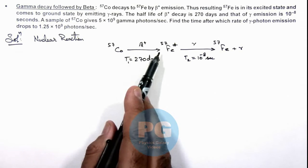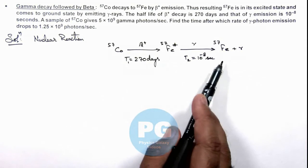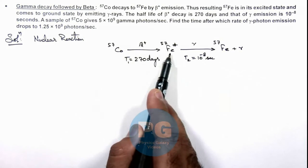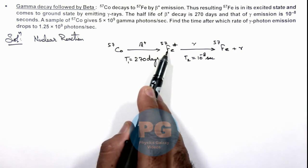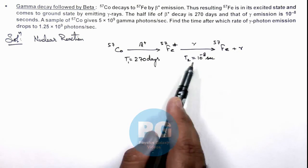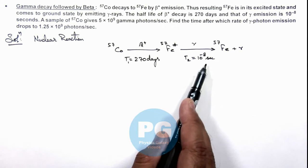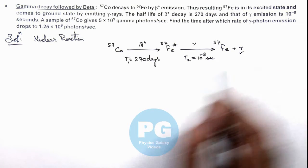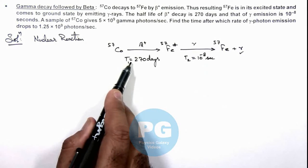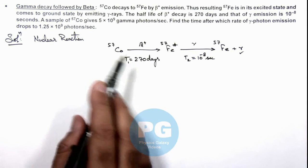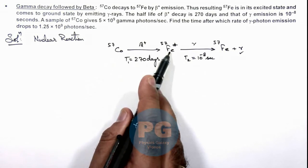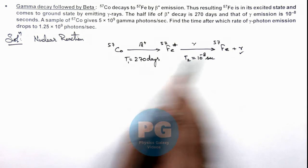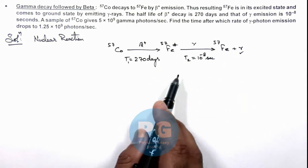That means this is a very slow decay process and this is a very fast decay process. That means if one cobalt decays to iron, then as soon as this iron is produced, immediately it'll emit gamma decay because the half-life time is very small. That means the rate at which these gamma photons are emitted will be controlled by this half-life time, because as soon as an iron is produced, gamma is instantaneously, almost instantaneously produced. So there is almost no or very small time lag in this reaction.